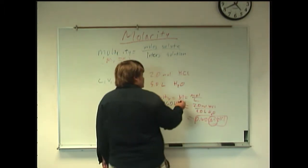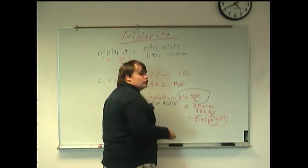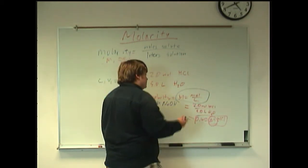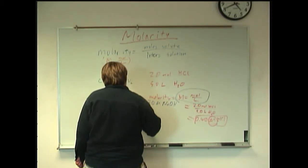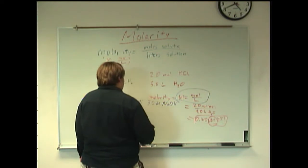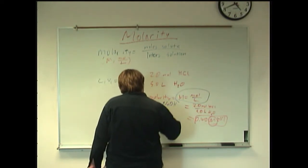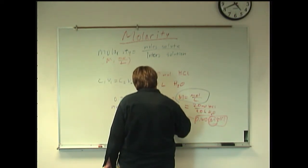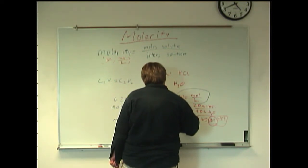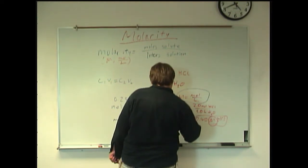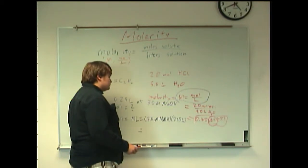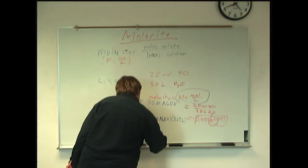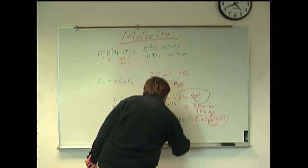We could rearrange this equation right here to get the moles by itself. In this case, our moles are just going to be equal to the molarity times the liters. In this case, that's 3 molar times 0.25 liters. And that is 0.75 moles.